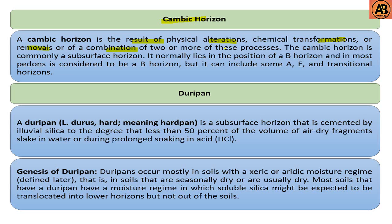The next one is the cambic horizon. The cambic horizon is the result of physical alteration, chemical transformation, or removal, or a combination of two or more of these processes. The cambic horizon is commonly a subsurface horizon. It normally lies in the position of a B horizon and in most pedons is considered to be a B horizon, but it can include some A, E, and transitional horizons.